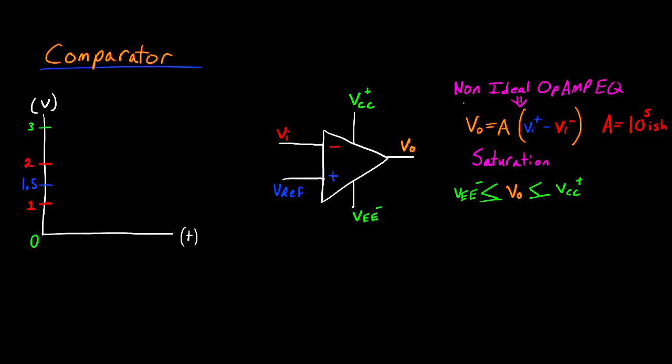The first is the non-ideal op-amp equation. In this equation, the output voltage is described as the gain of the op-amp multiplied by the difference between the positive input and the negative input.